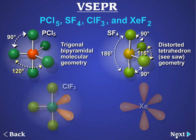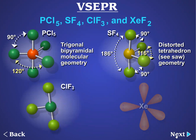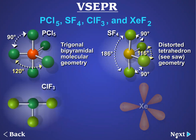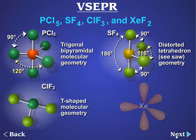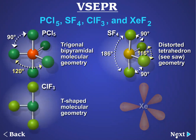In ClF3, there are three bonding pairs of electrons and two lone pairs. The lone pairs occupy equatorial positions. The molecular geometry — that is, the arrangement of the chlorine and three fluorine atoms — is T-shaped. Due to the lone pairs, the chlorine-fluorine bonds are pushed together, and the fluorine-chlorine-fluorine bond angles are slightly less than 90 degrees.